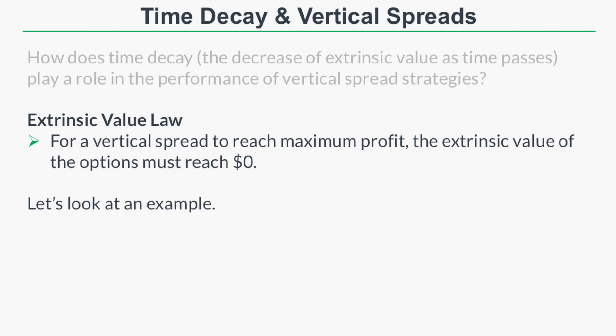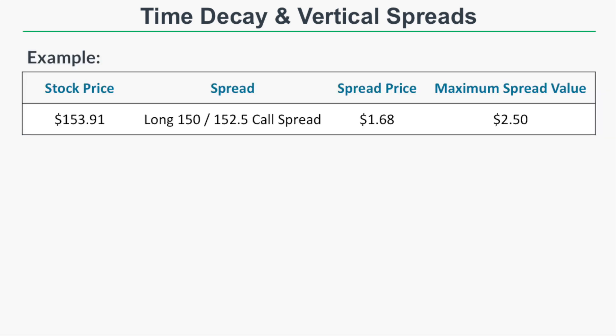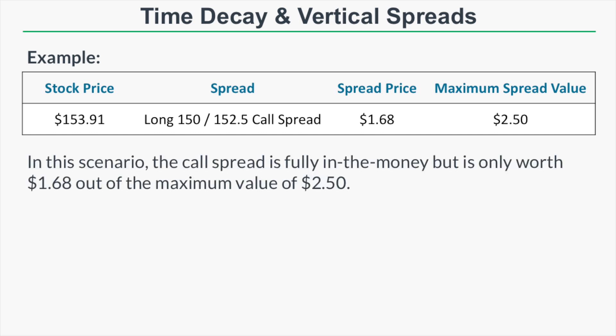This might seem a little confusing, but we're going to go through a bunch of examples to show you exactly what I mean. For this hypothetical example, let's say the stock price is currently at $153.91 and we look at the 150/152.5 call spread. At the time of looking at the call spread, the spread's price is only $1.68, but we know the spread's value could rise to $2.50 if it is fully in the money at expiration, because a spread can only be worth as much as the width of the strikes.